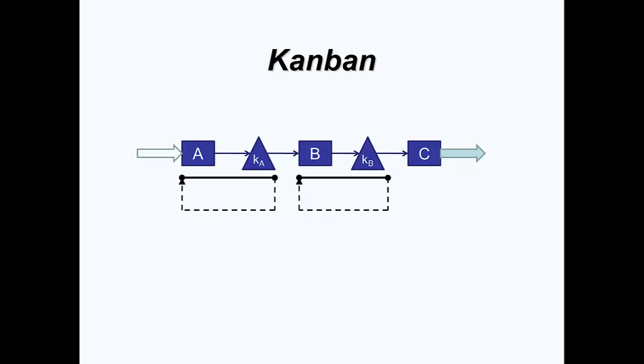A Kanban system differs from the ConWhip system in that a separate set of cards is dedicated to each work center. Here, the function of the cards is similar to what we have just seen in ConWhip, but now there are two card loops, each separately dedicated to work center A and B. Because of the separate card loops, at rest inventory is also evenly distributed between A and B, instead of accumulated at the end.